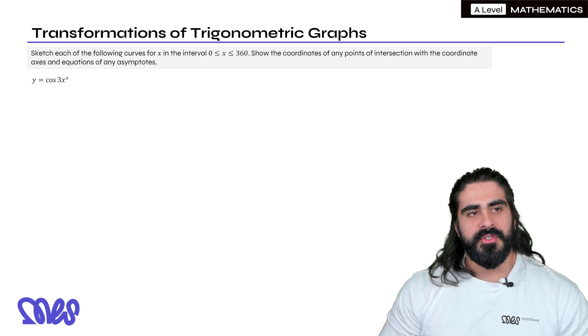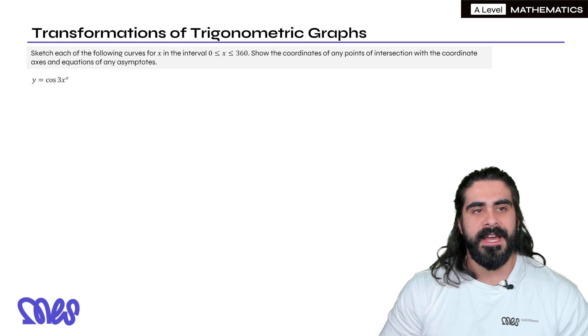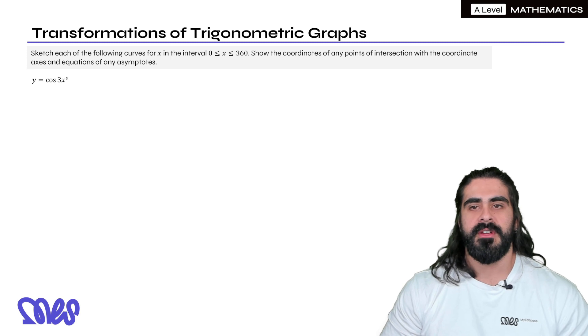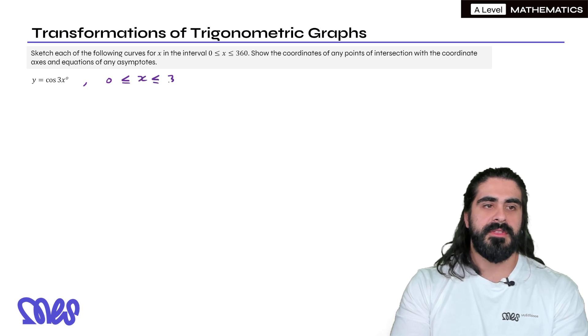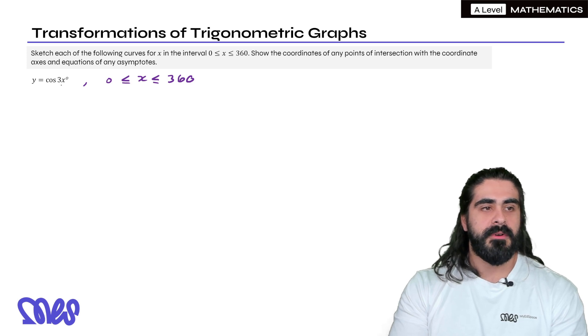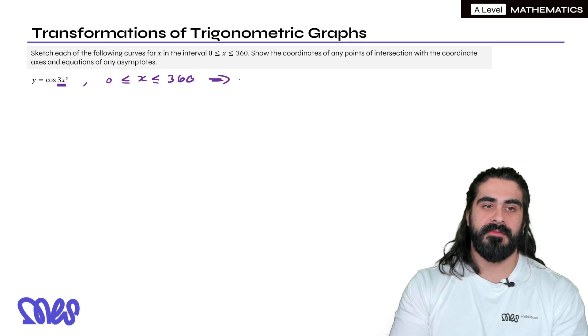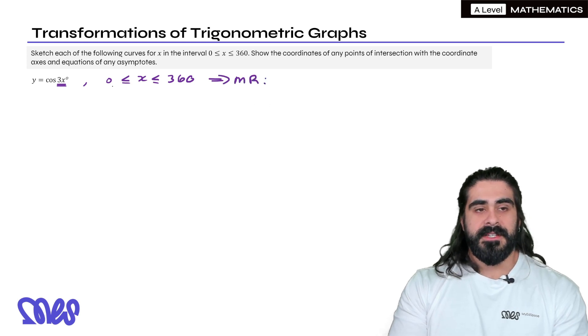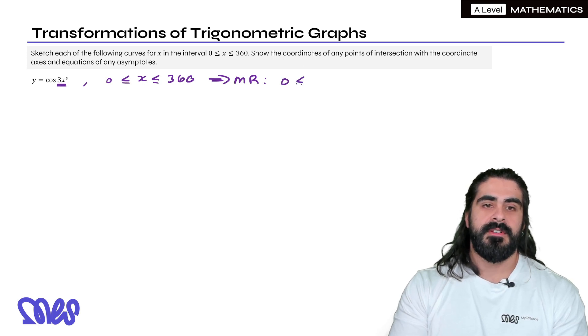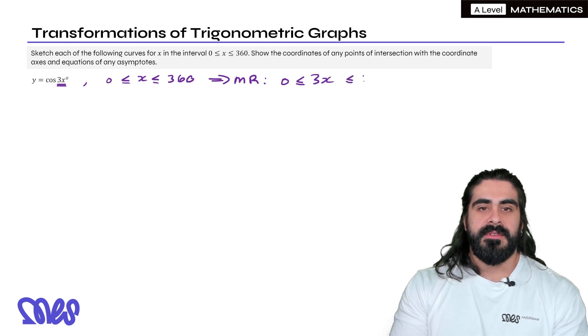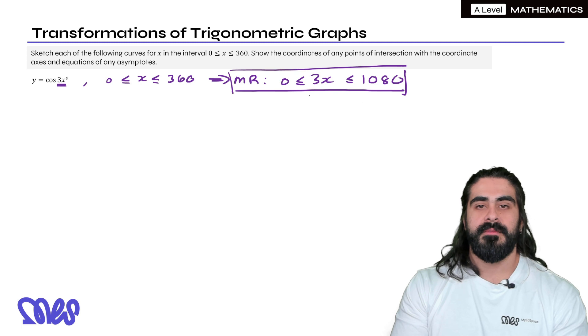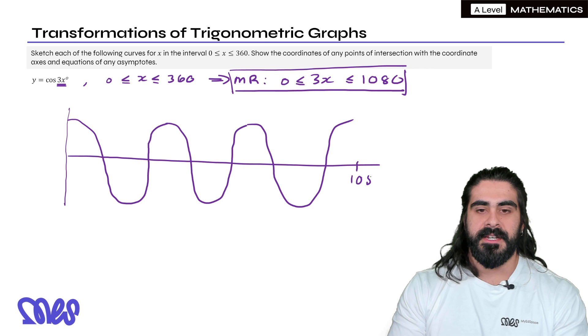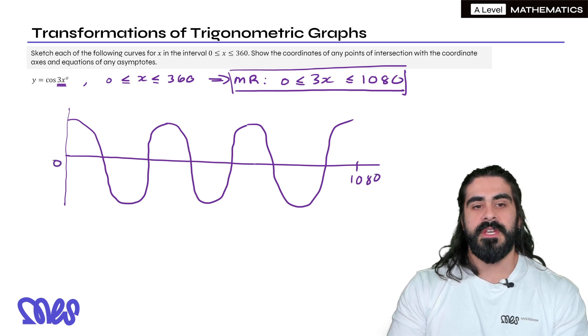All right, transformations of trig graphs. I'm going to show you guys a trick to how to do these really quickly. So sketch each of the following curves for x in the interval between 0 and 360. Show the coordinates of any points of intersection with the coordinate axes and equations of any asymptotes. So the first one I'm going to do is cos 3x. So you want to sketch cos 3x for x between 0 and 360. Now the first issue here is that our range is for x but we're dealing with 3x. So we do something known as modifying the range. I'm going to say MR. I'm going to times everything by 3 here so that instead of it being x, it reads 3x. So we have 360 times 3 is 1080.